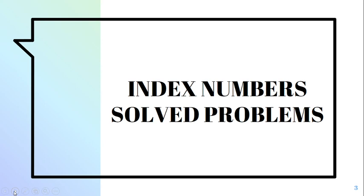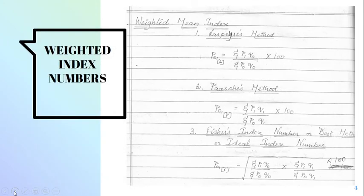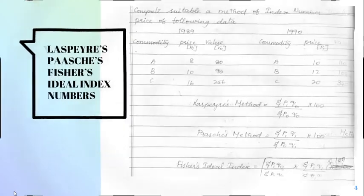Today we will be seeing some solved problems in index numbers. The weighted index numbers, the Laspier's method, the Paasche's method and the Fisher's ideal index numbers are highlighted in this problem. So they've asked us to use a suitable method of index number to find.